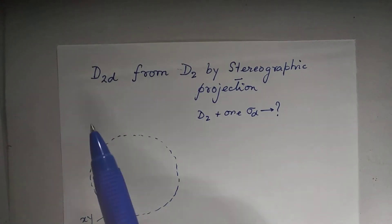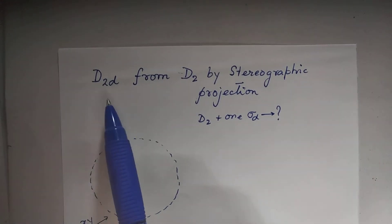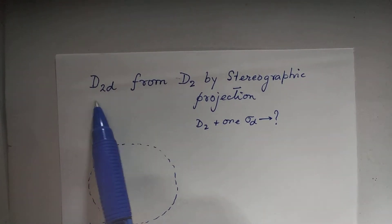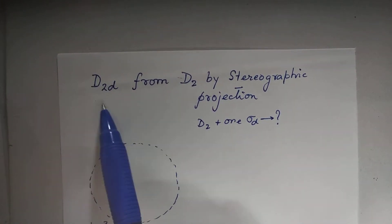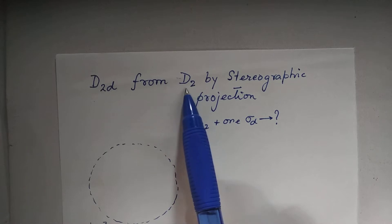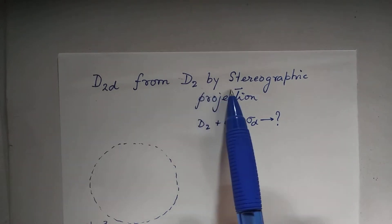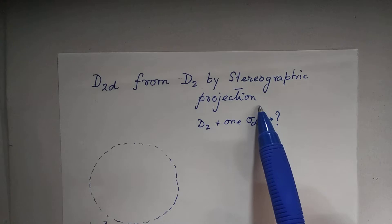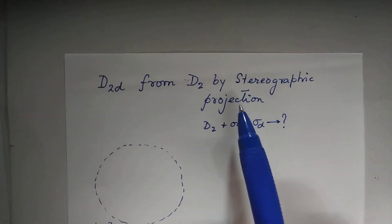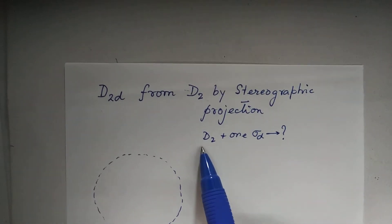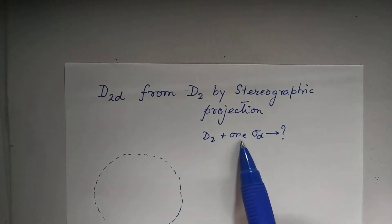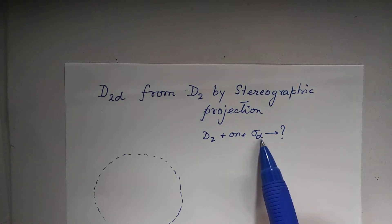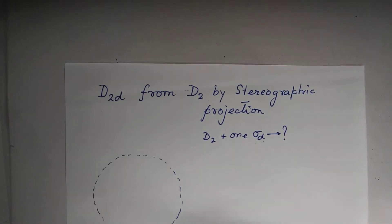In this video I am going to discuss how to obtain the D2d point group from the D2 point group by the method of stereographic projection. Our objective is to start with a D2 point group, add just one dihedral plane, and to see what happens.